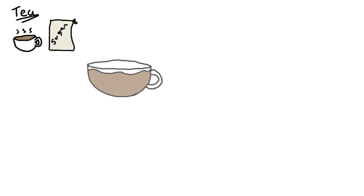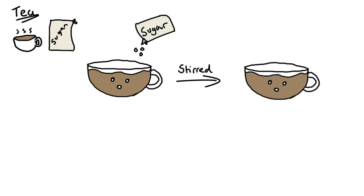So if we take our cup of tea and add sugar to it, there's now sugar floating around in the tea. With a little stirring, the sugar seems to disappear.